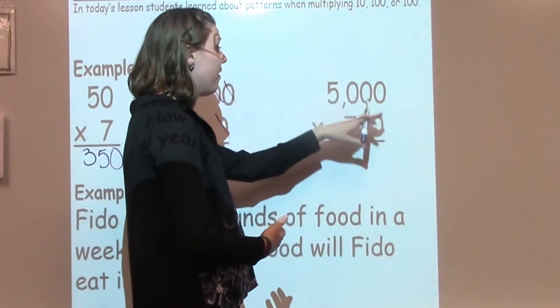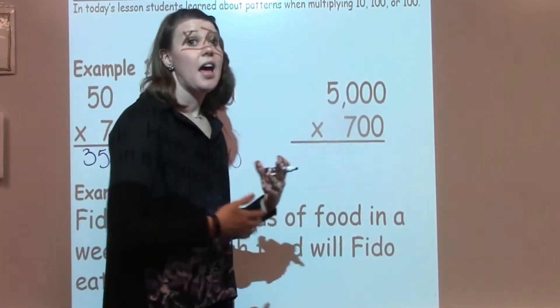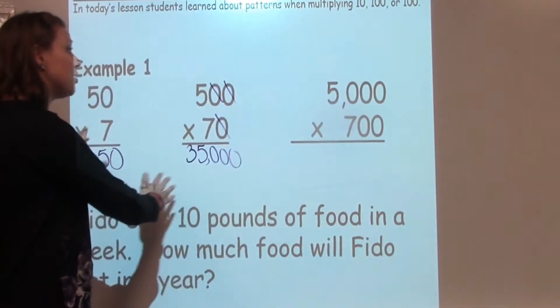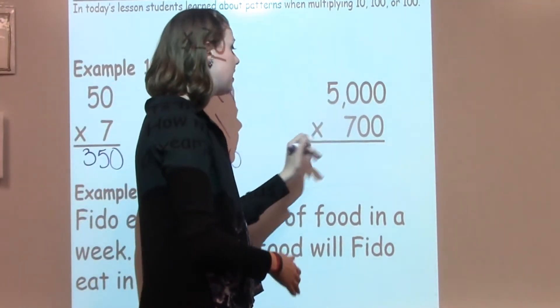Going to our next question, we have 5,000 times 700. Again, applying the same strategies from the previous two problems, I'm going to say 5 times 7 is 35.